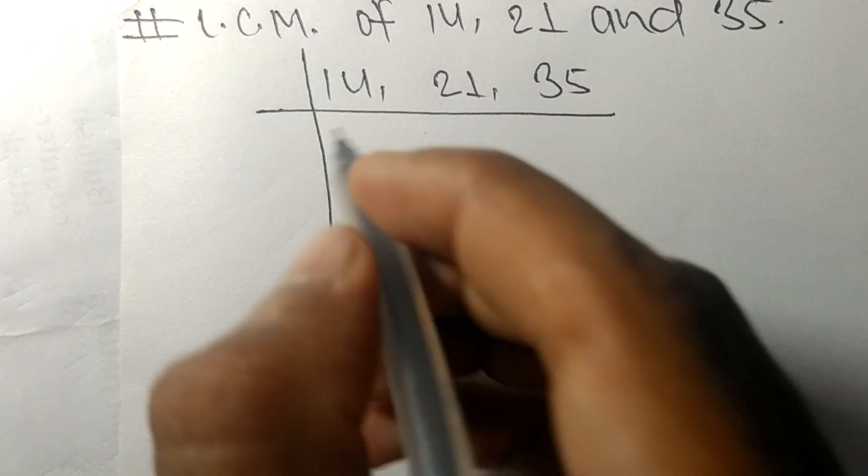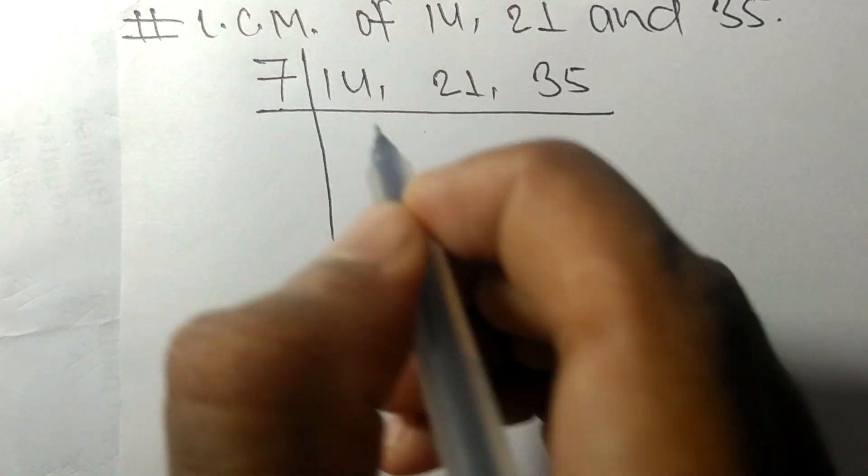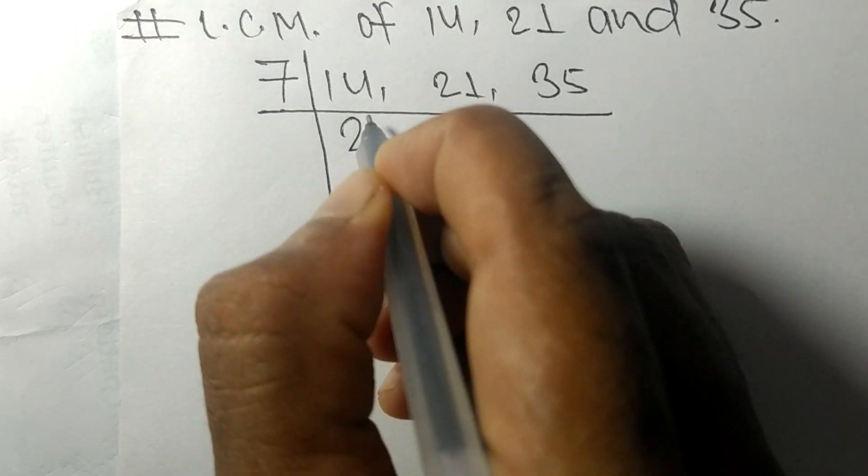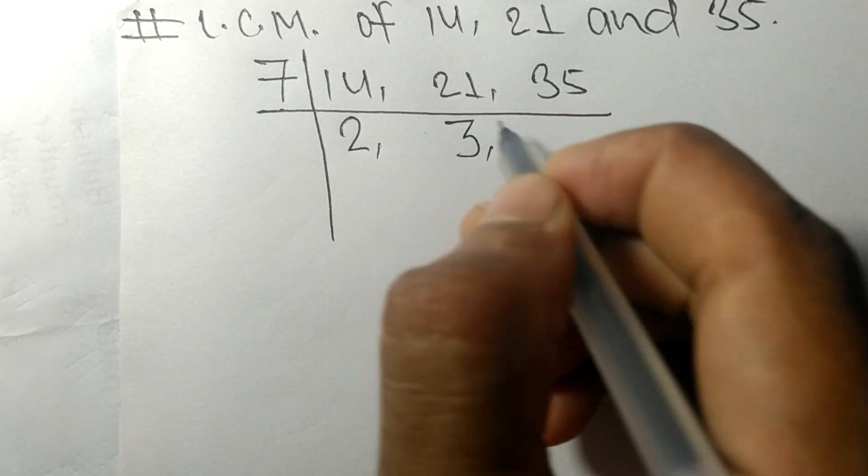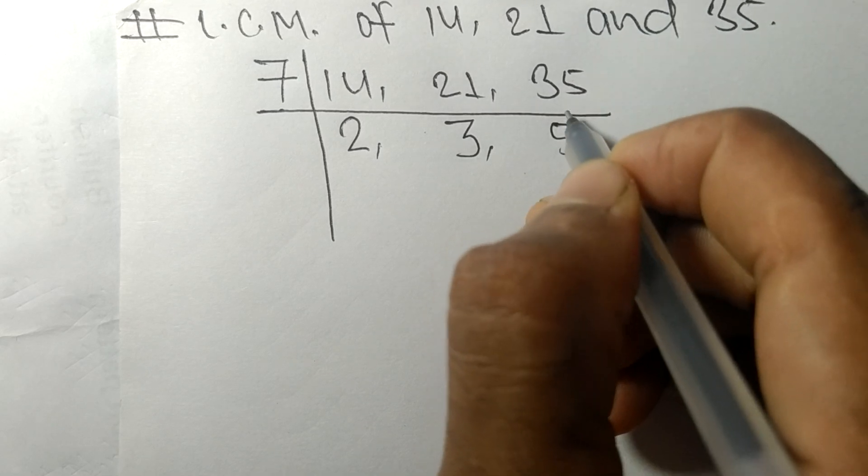So these all numbers are divisible by 7. 7 times 2 is 14, 7 times 3 is 21, 7 times 5 is 35.